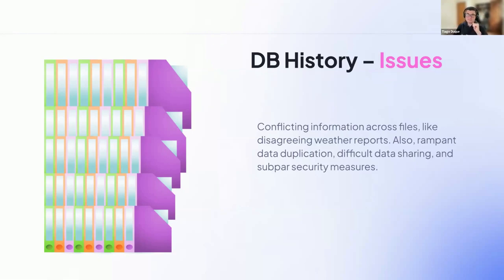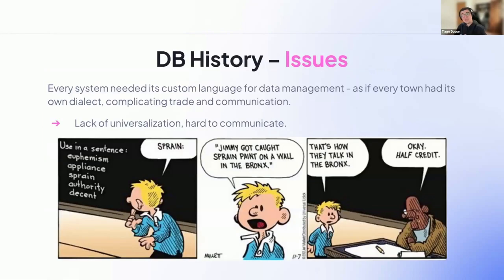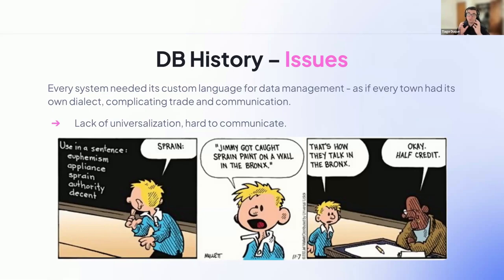So we start to question: should we develop a system for that? That's what most institutions and companies using computers started to do. They created their own systems to find files and retrieve information. But there's another issue: every system created its own way to access data, to retrieve, index, and find things quickly. You could not share files between one database system from one company and another because they were totally different. An engineer would have to learn everything from scratch at every new company. This lack of universalization was a real issue.